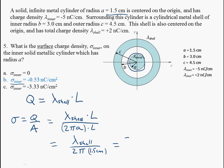So if I go minus 5 nanocoulombs per centimeter, that was lambda, divided by 2 times pi times 1.5 centimeters, I get answer B.